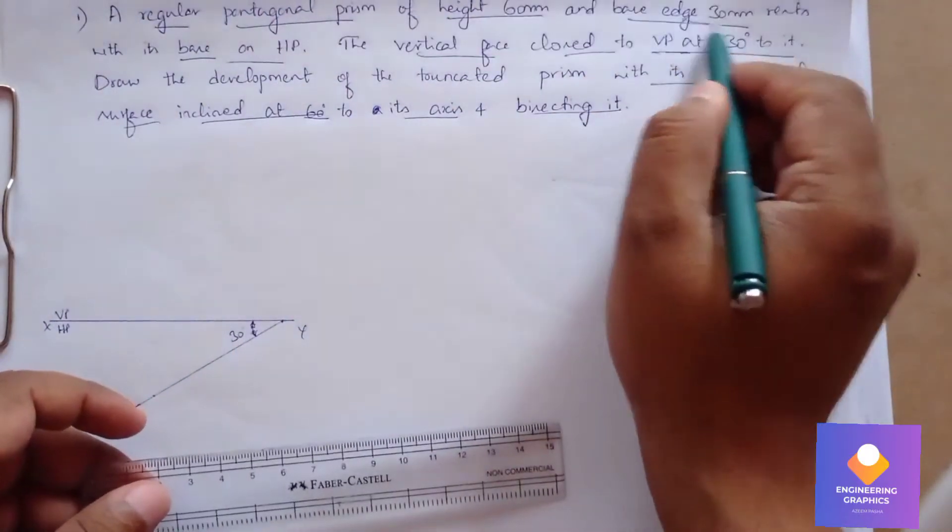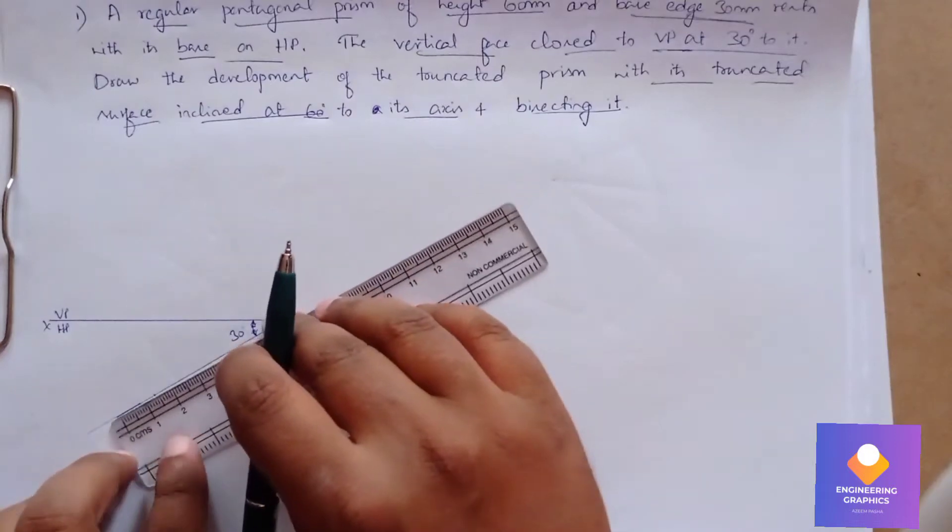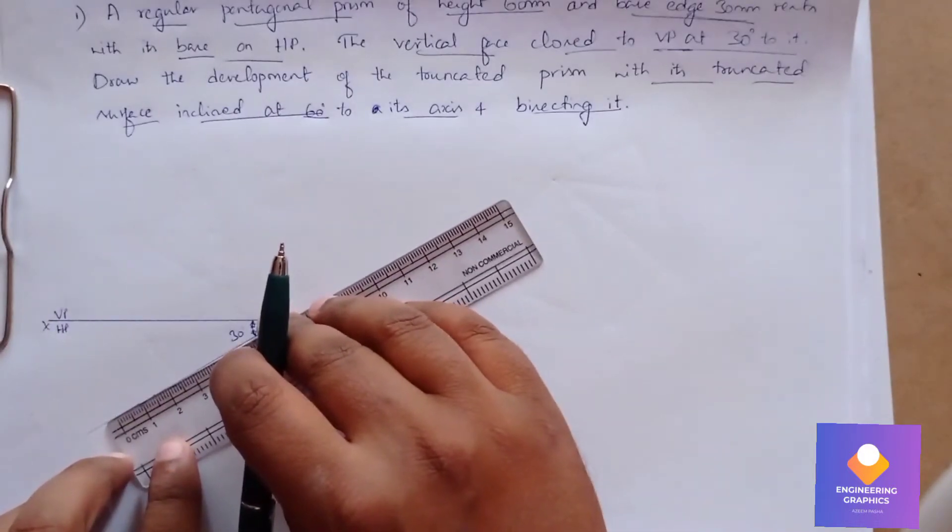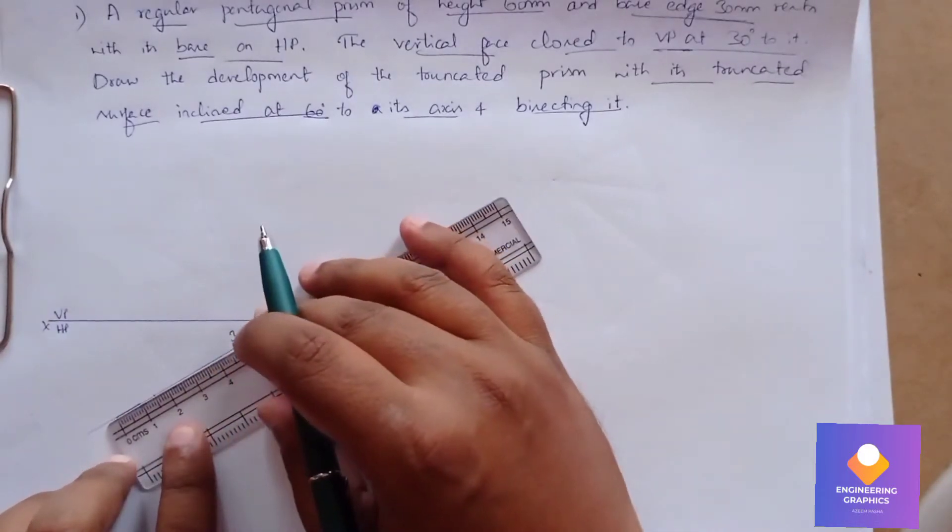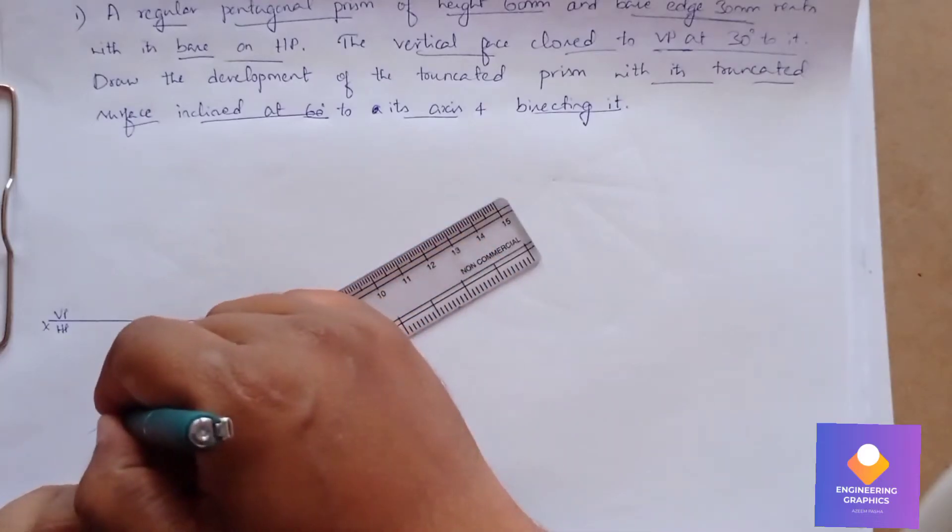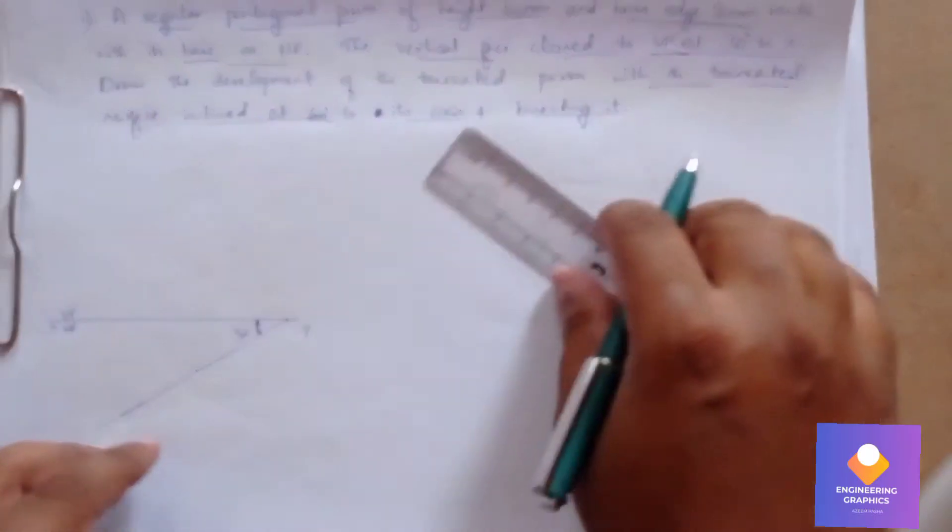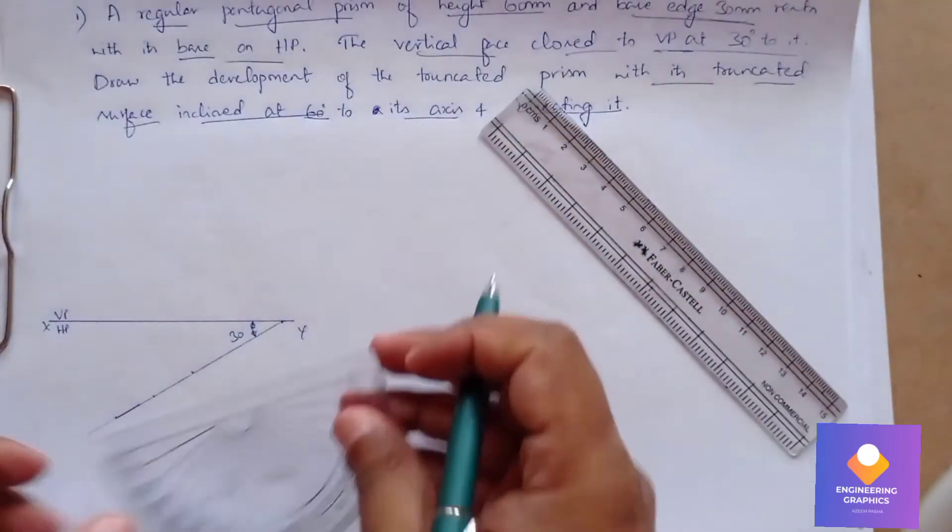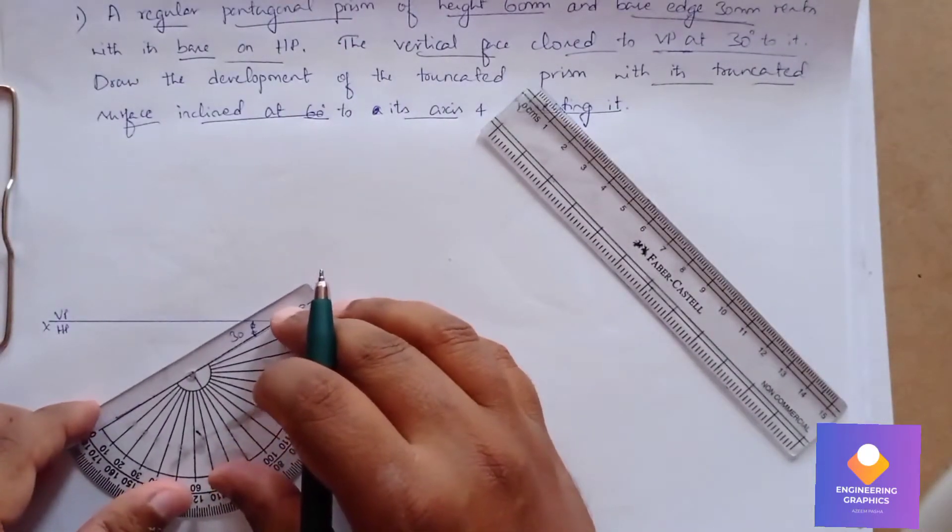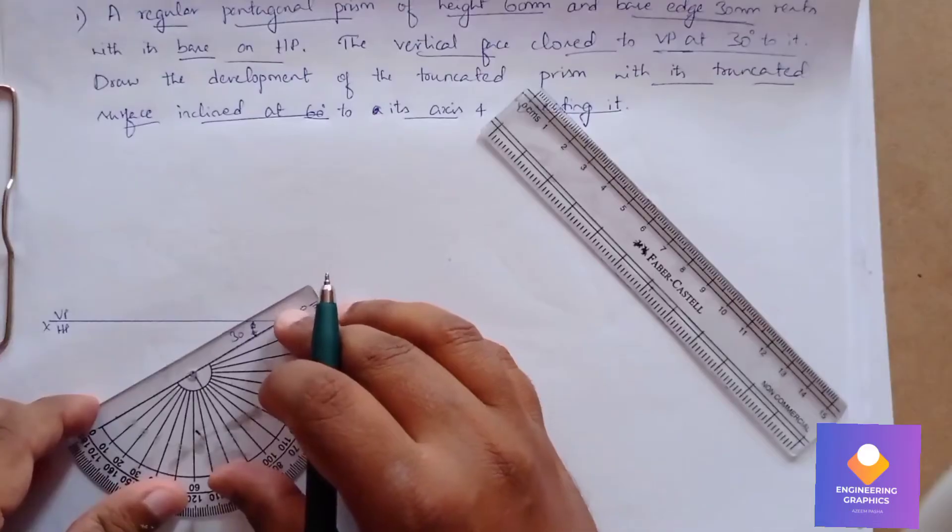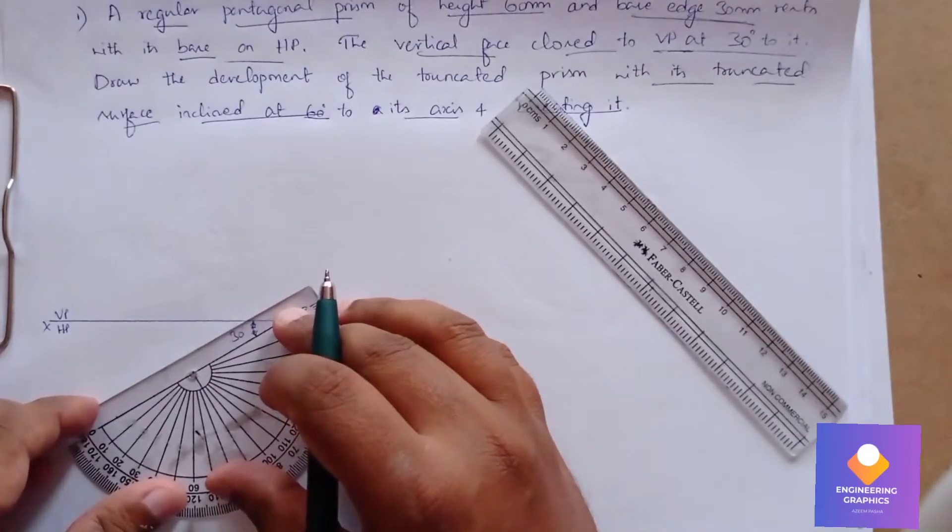Now 30mm we have to consider. Take 30mm from the reference point. Take the protractor and mark 72 degrees—we know that as the external angle of pentagon, it is 72 degrees.